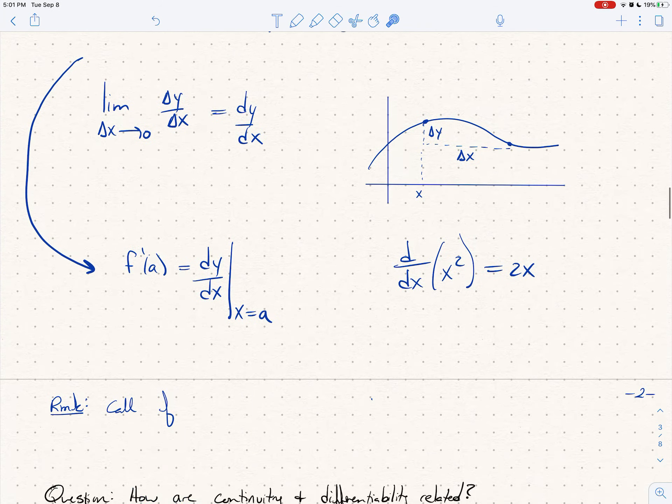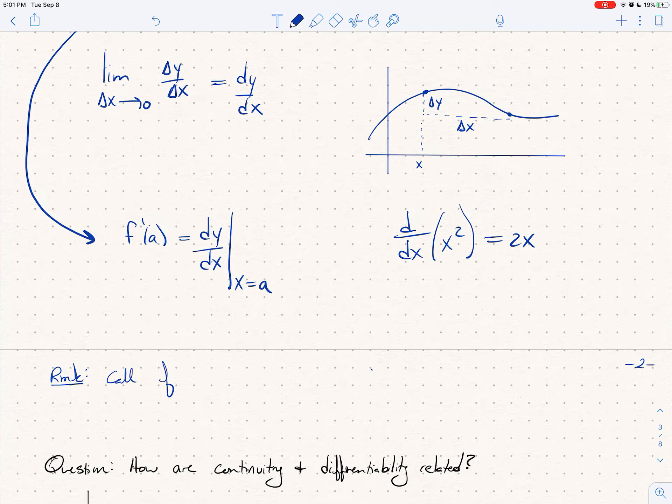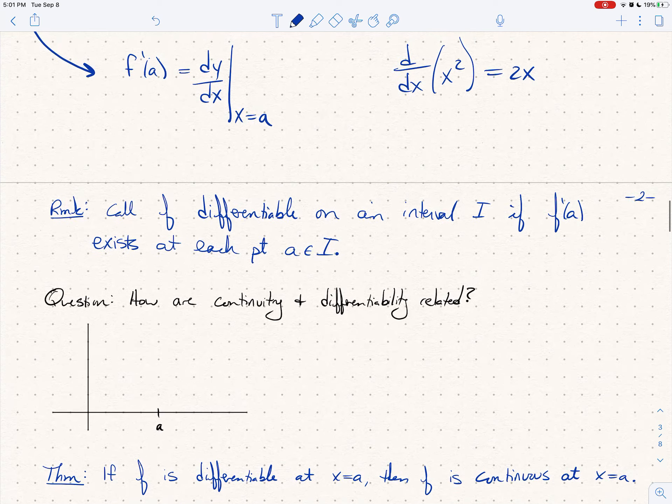All right, so we're going to call a function f differentiable, that's our sort of big word for today, differentiable on an interval i if f prime of a, the derivative of f at a exists, so that limit exists, there is a tangent line at each point a in the interval i, and so one of the big questions that we want to tackle is how are the notions of continuity and differentiability related?